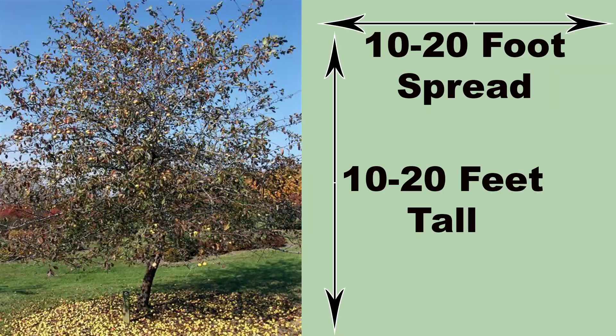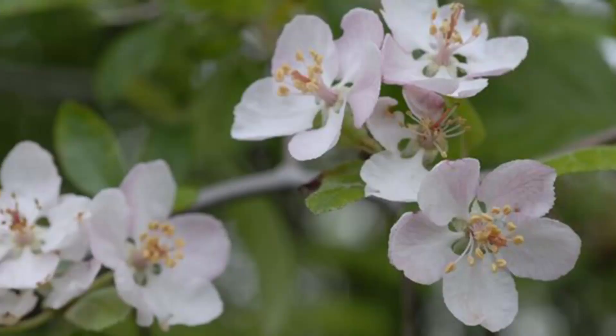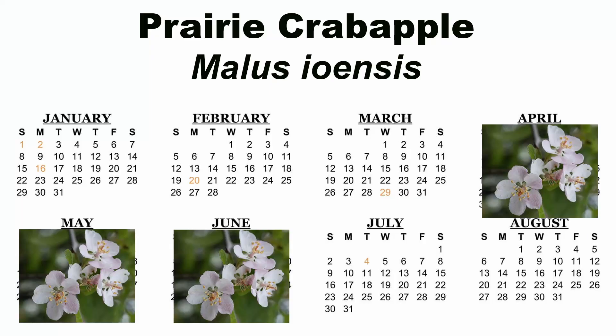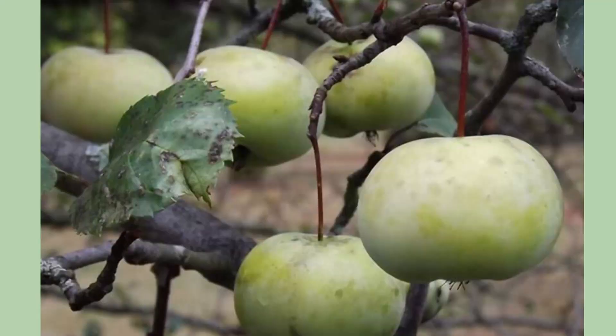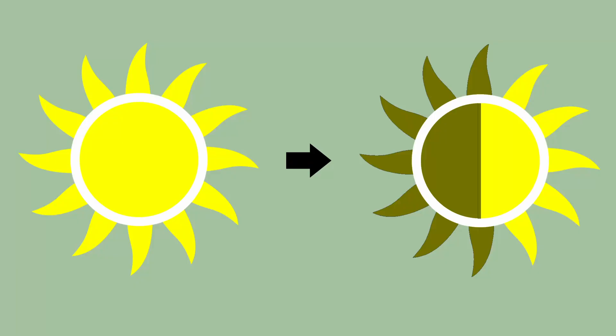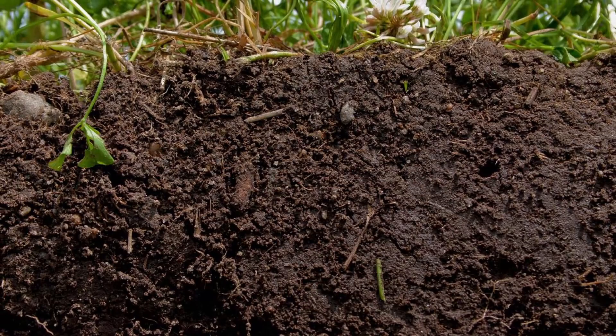The prairie crab apple, Malus ioensis, is the smallest species on this list, growing 10 to 20 feet tall with an equal spread. As its name suggests, it is a species of the prairies and areas with similar soils. It blooms in spring, with pink to white flowers appearing from April to June depending on location. The small three-quarter to one-and-a-quarter-inch sour green to yellow fruits ripen from August to September. It grows in full sun to partial shade but prefers full sun.